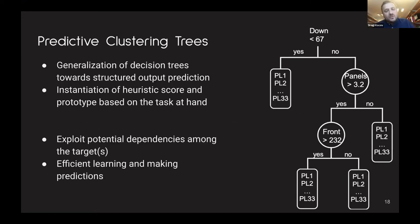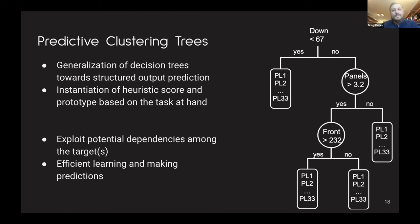We are working using the predictive clustering paradigm, specifically focusing on predictive clustering trees, or PCTs. These are a generalization of decision trees towards structured output prediction. On the right-hand side, I'm illustrating a hypothetical PCT — it looks like an ordinary decision tree, with tests on descriptive attributes in the internal nodes, but with the difference that in the leaves you have predictions not for one target variable, but for all of them — in this case for all 33 currents.